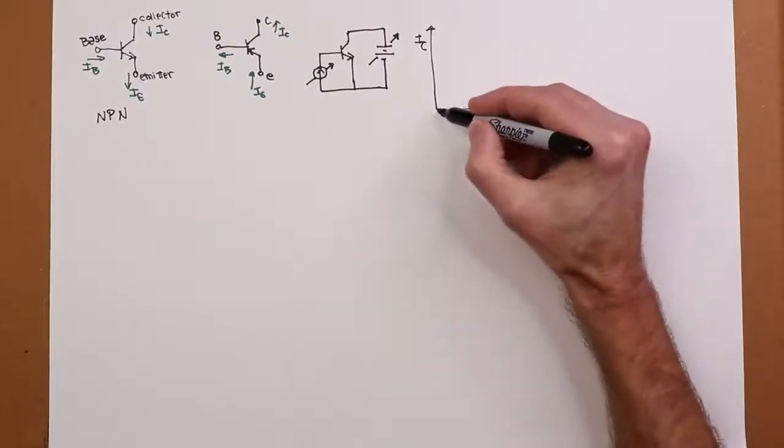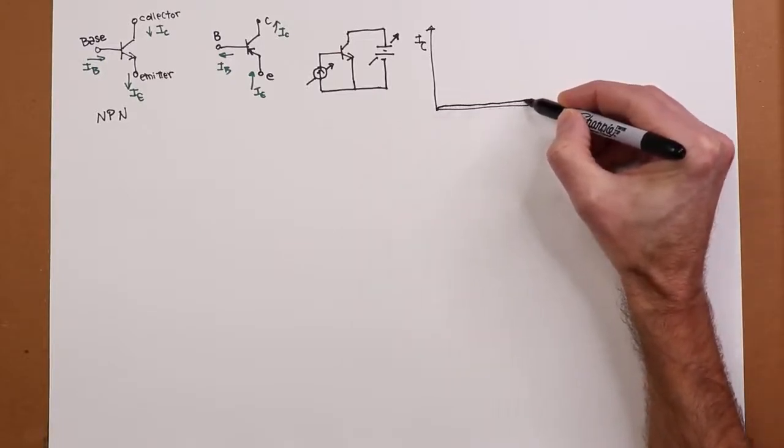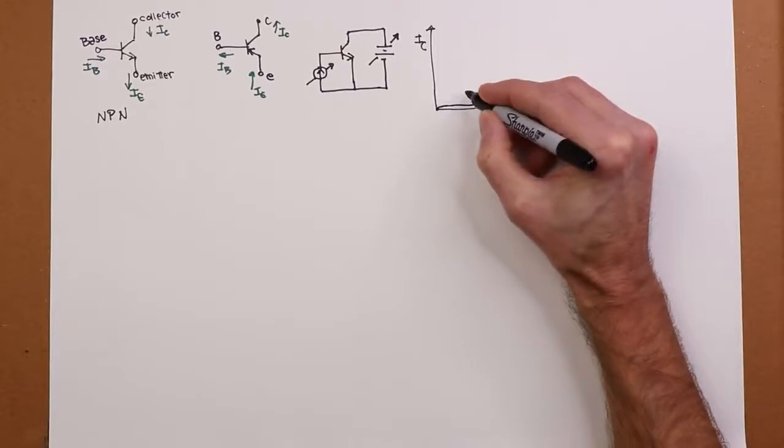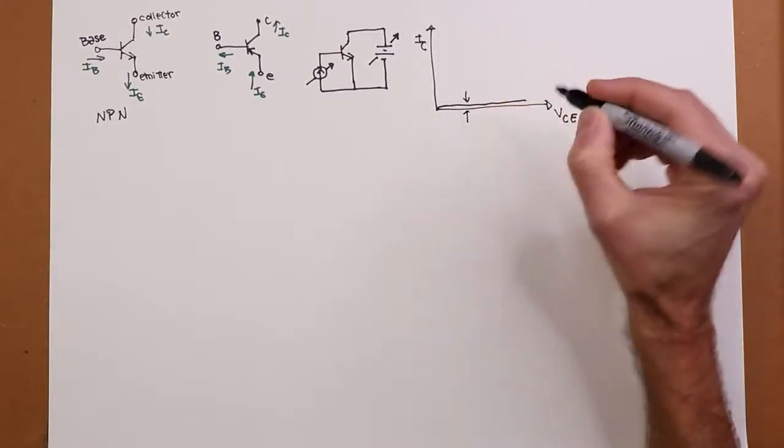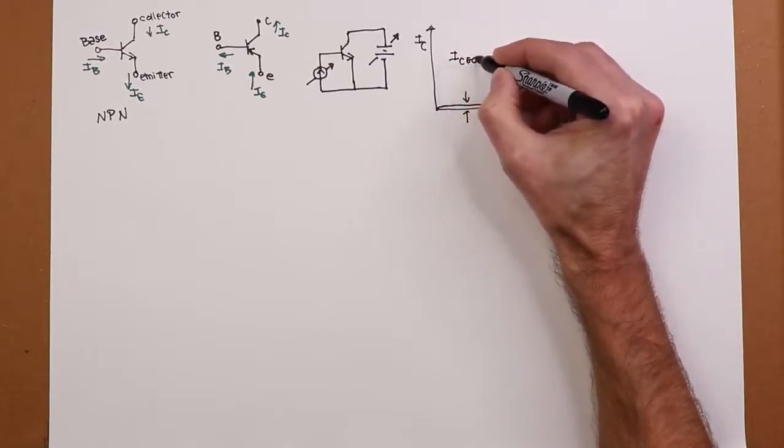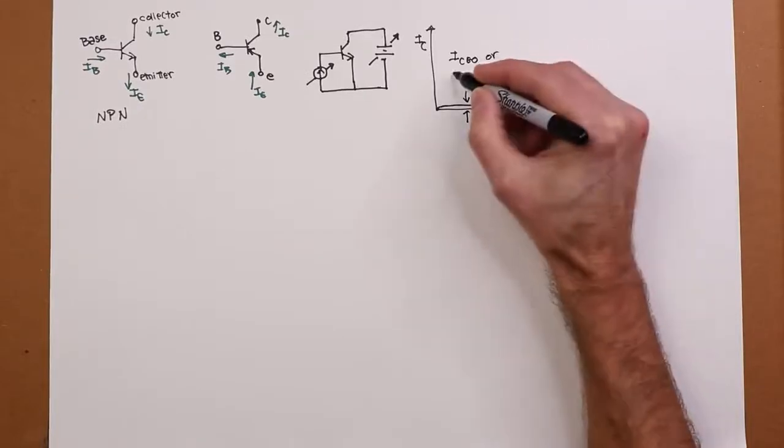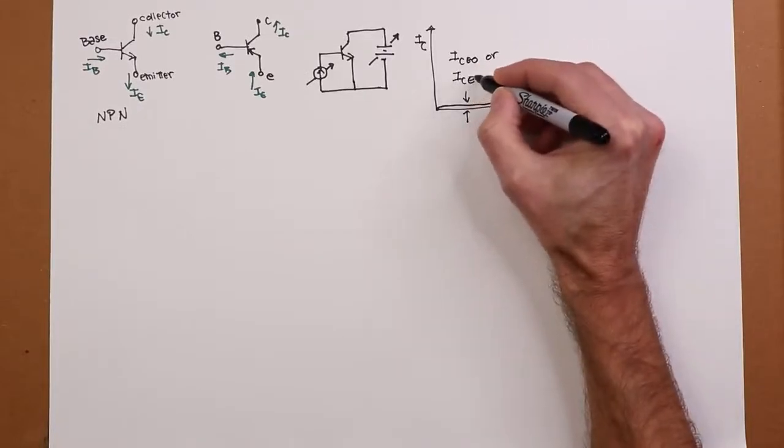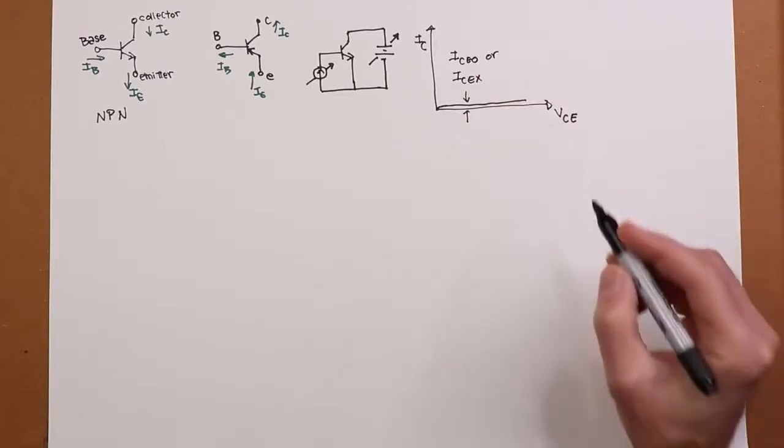Well, with no base current, ideally we would see no current at all through the collector emitter. In fact, we will see a small leakage current, which I'm going to exaggerate here, and that current is referred to as either ICEO, meaning collector emitter current with an open base, or it's sometimes referred to as ICEX. Same thing, no connection on the base.